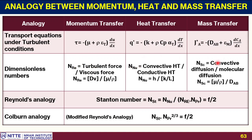A high Reynolds number means more turbulent flow. A large Nusselt number means convective current is very large. A large Sherwood number means convective diffusion is more predominant. Conversely, a low Reynolds number, low Nusselt number, or low Sherwood number means molecular motion is predominant — that is, molecular momentum transfer, conductive heat transfer, or molecular diffusion.